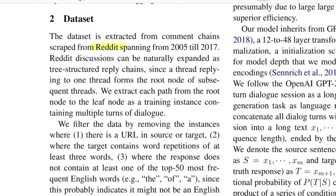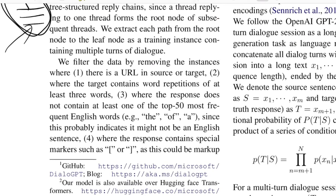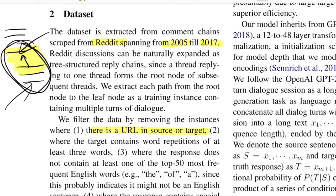The dataset is extracted from Reddit from 2005 to 2017. Reddit allows a title with comments and nested comment replies, so they extract all intermediate threads spanning from any nesting down to the leaf nodes — a head node and leaf node form a conversation. After extracting these segments, they filter out noisy instances using several rules. First, they remove instances if there is a URL in either the source or the target, where the source is the dialogue history and the target is the response to be generated.